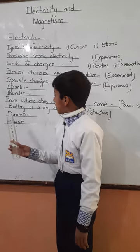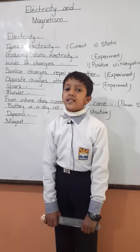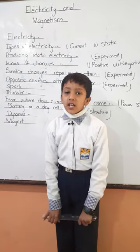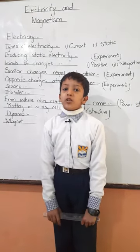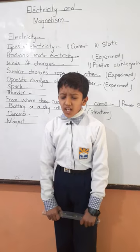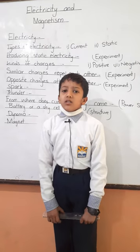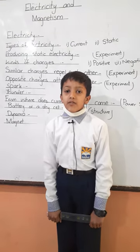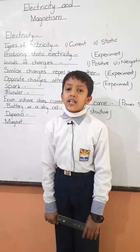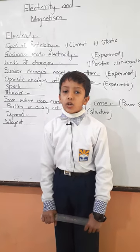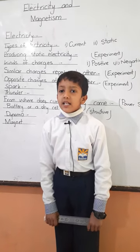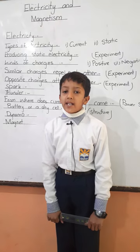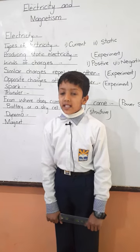A magnet is a special object. It pulls things which are made of iron, nickel, and copper. A magnet is made of iron and steel.